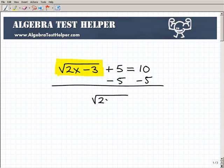All I need to do is subtract 5 from both sides of the equation, and I'm left with the square root of 2x minus 3 equals 5. So that was like step 1, to isolate that square root part of the equation.